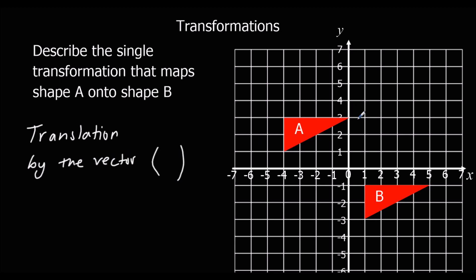So by the vector, then how far right have we gone? Let's go from the top right to the top right. We've gone 1, 2, 3, 4, 5 right. So 5 right. And then 1, 2, 3, 4 down. So because it's down, it's minus 4. So it's a translation by the vector 5, minus 4.